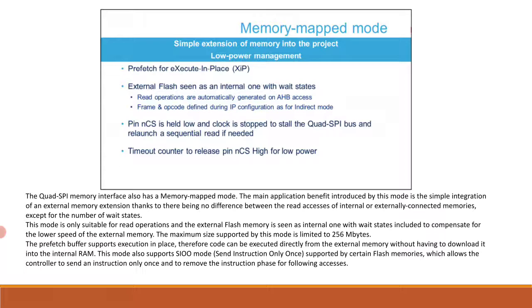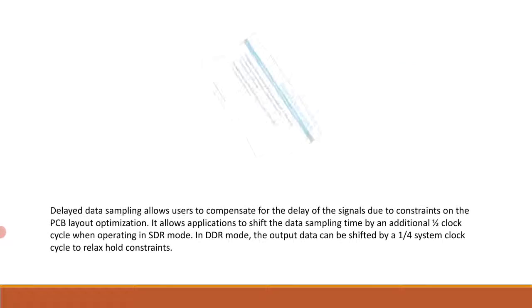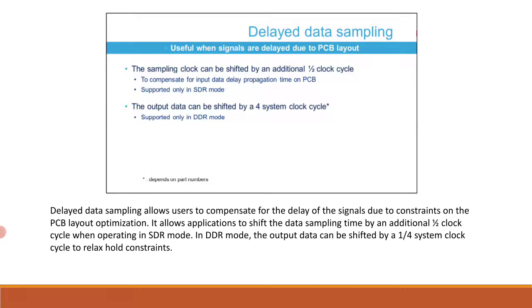Delayed data sampling allows users to compensate for signal delays due to constraints on PCB layout optimization. It allows applications to shift the data sampling time by an additional half clock cycle when operating in SDR mode. In DDR mode, the output data can be shifted by one-fourth of the system clock cycle to relax hold constraints.